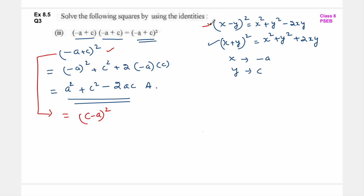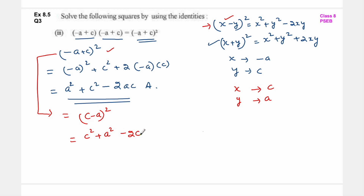अभी मैं कौन सी identity का यूज़ कर सकती हूँ - x minus y whole square वाली identity का. Now we have x as c, y as a. So x का square मतलब c का square, y का square मतलब a का square, minus 2xy: so minus 2 into c into a. So c square plus a square minus 2ac. देखो - ये दोनों बिल्कुल same हैं.